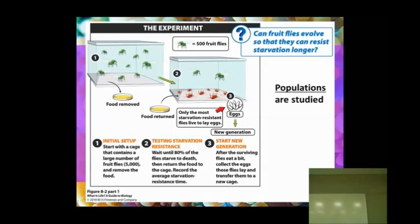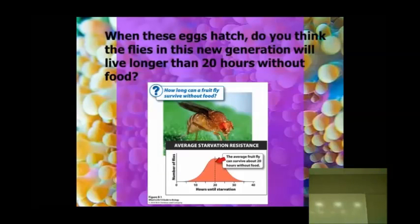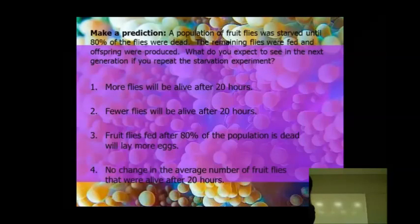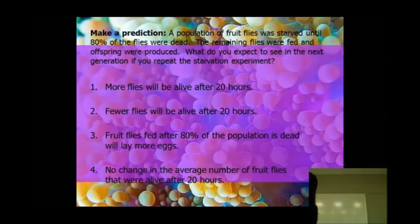One of the important things to remember when we talk about evolution is we're not talking about individuals changing. We're talking about populations changing. It's not just one fruit fly turning into something else. We're talking about the entire population of fruit flies here. When the eggs of the two surviving fruit flies hatch, the next generation will be able to live longer than 20 hours without food.